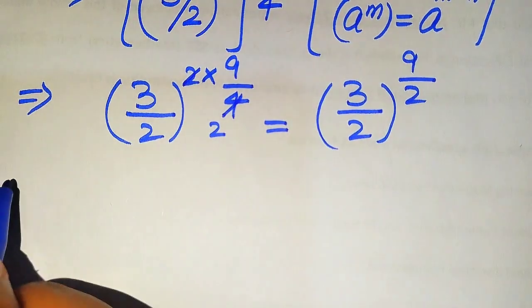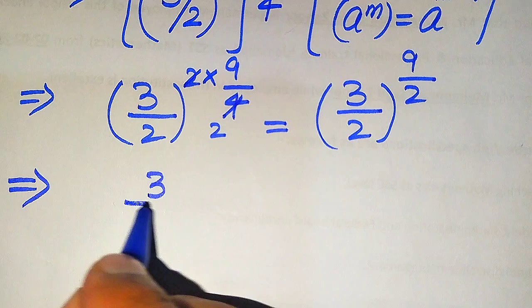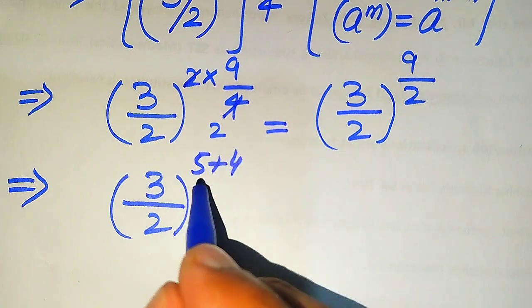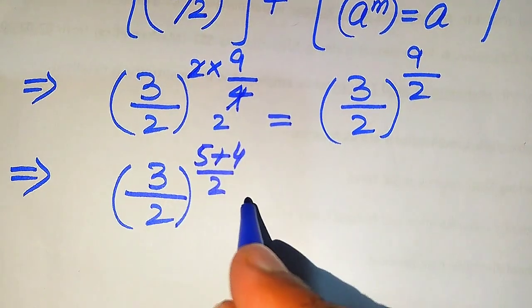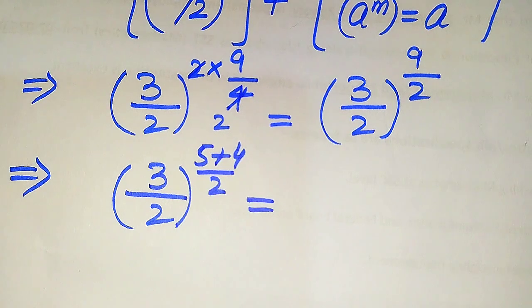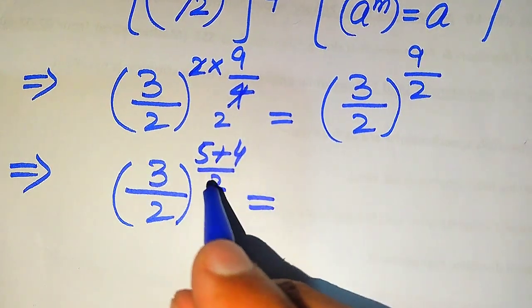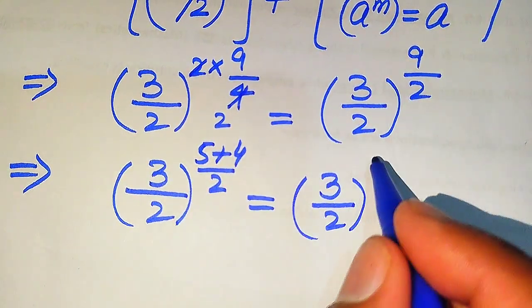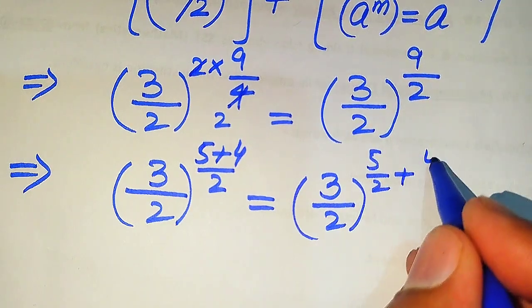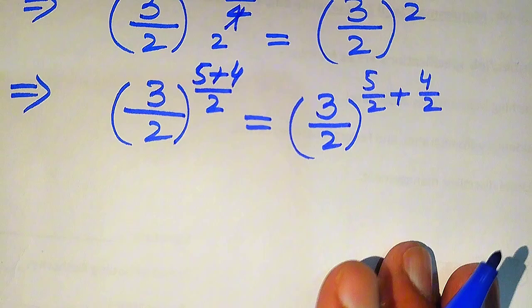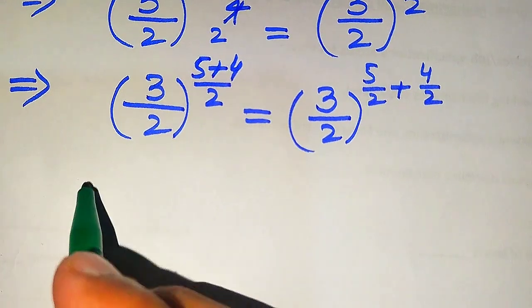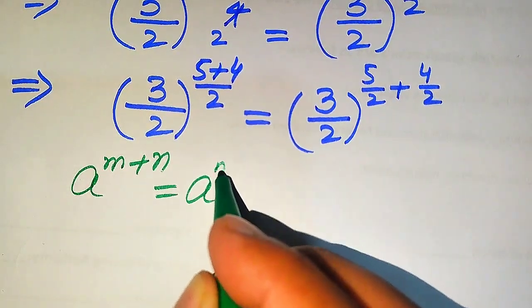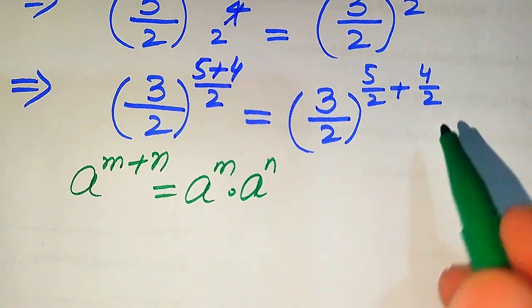Now we need to focus on the exponent 9. We write 9 as 5 plus 4, so the exponent becomes (5 plus 4) divided by 2. In the next step we separate these two values; when we break this fraction it will be written as (3 over 2) to the power of 5 over 2 plus 4 over 2. We use the exponential law: a to the power of m plus n equals a to the power of m multiplied by a to the power of n.